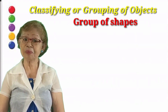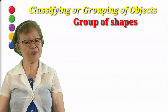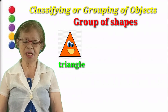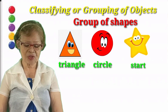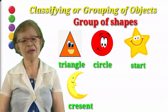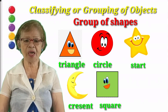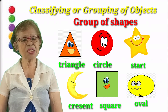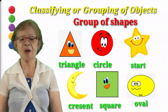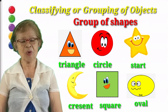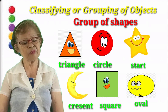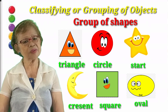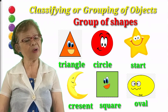Now we go to the group of shapes. I know it's so easy for you. The group of shapes are triangle, circle, star, crescent, square, and oval. So we finished our grouping or classifying of objects. We have the group of shapes, the group of books, and also our group of fruits.